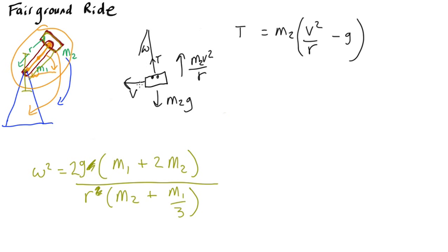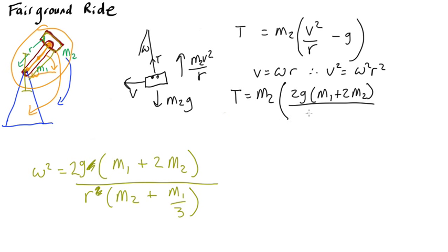Now, it's got an angular speed omega. How does that convert into the linear speed v? Well, if you remember, it's simply that v equals omega r. So we get the tension is going to be m2. Now, so v squared – so therefore, v squared equals omega squared r squared. So this is going to be omega squared r. We've already got omega squared down here, so it's going to be that times r. That means we get rid of the r on the bottom, so it's going to be 2g m1 plus 2m2. We've got rid of the r all over m2 plus m1 over 3 minus g.